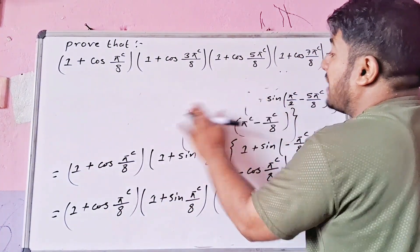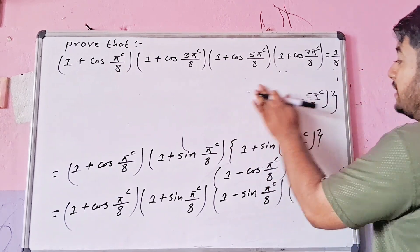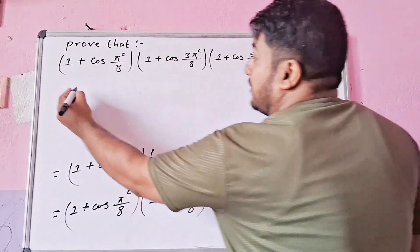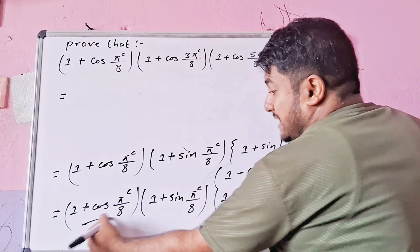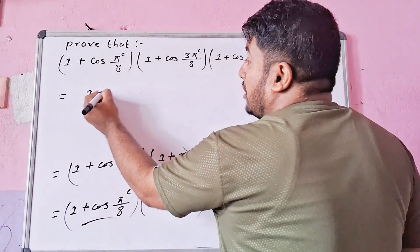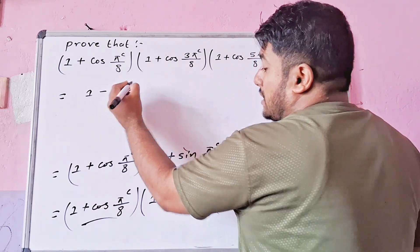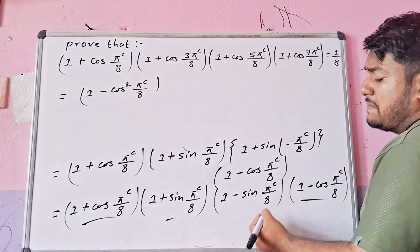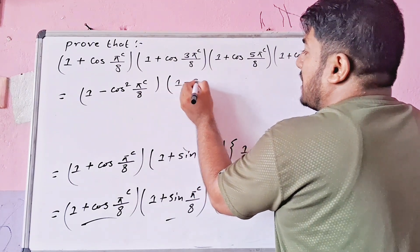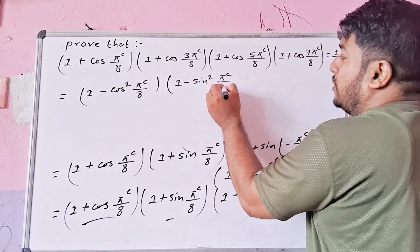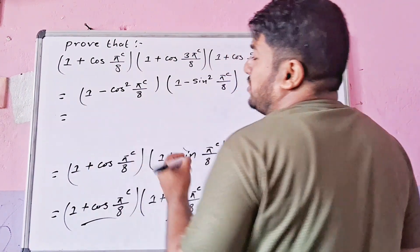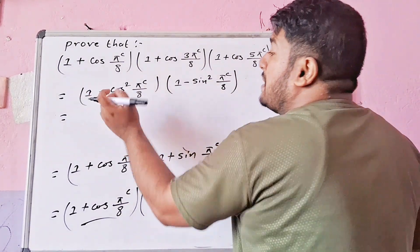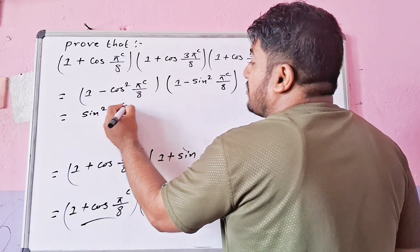We apply the identity A² − B² = (A + B)(A − B). So (1 + sin(π/8))(1 − sin(π/8)) = 1 − sin²(π/8). This gives us (1 − sin²(π/8)) squared.